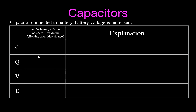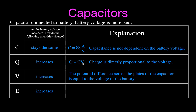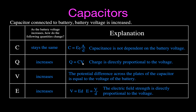So we saw that the capacitance stayed the same, the charge increases, the voltage increases, and the electric field strength increases. The capacitance remains the same because it's only dependent upon the area and the distance, not the voltage. The charge increases because it's directly proportional to the voltage. The voltage increases because it equals the battery voltage, and we increased that. The electric field strength is directly related to the voltage, so when we increase the voltage, we increase the electric field strength.